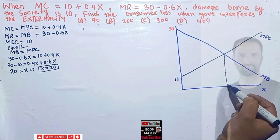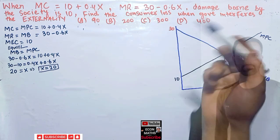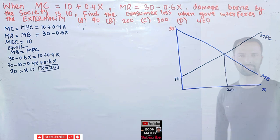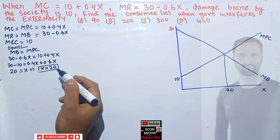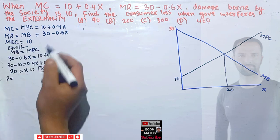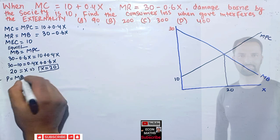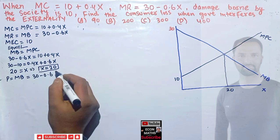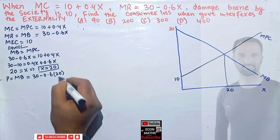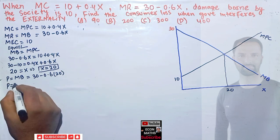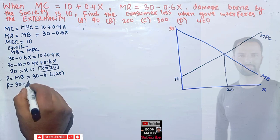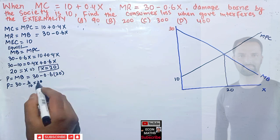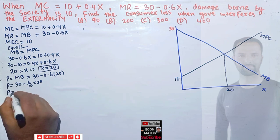So initially we will be producing 20 units when we don't take into account the damage borne by society. What will the price be when x equals 20? Price equals marginal benefit: 30 minus 0.6 times 20 equals 30 minus 12, which equals 18. So our initial equilibrium price is 18.